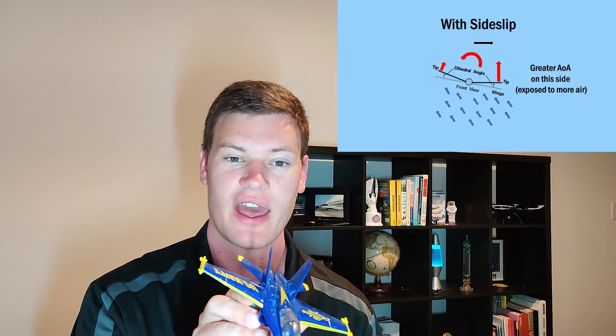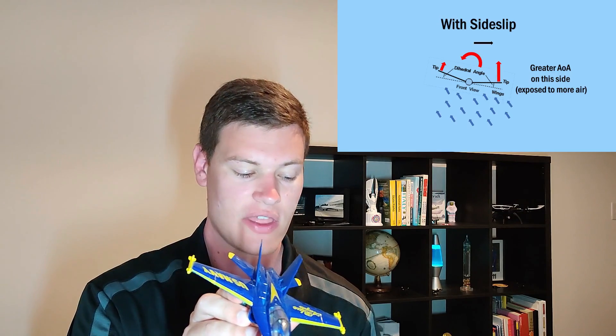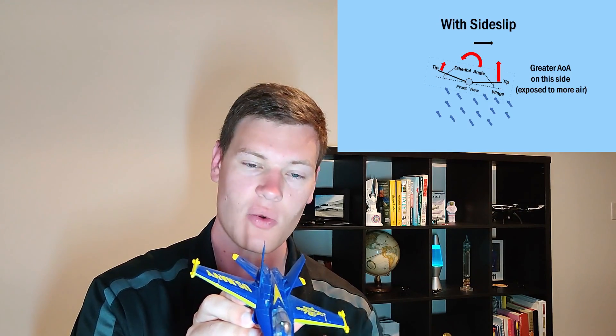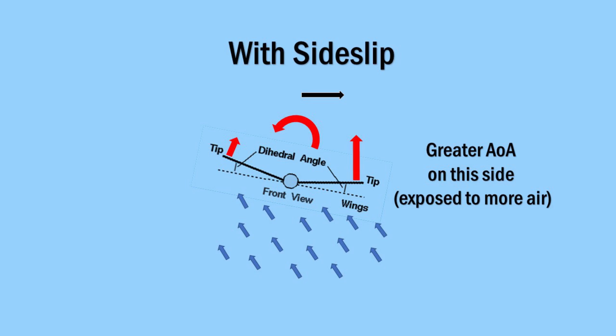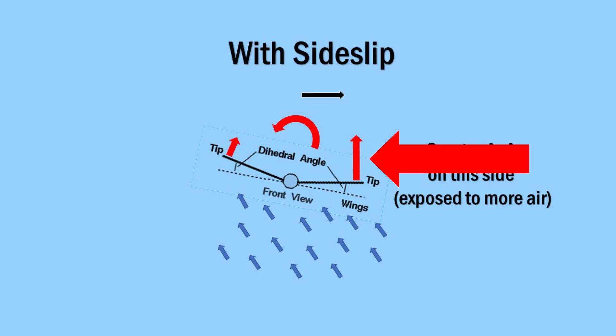What sideslip means is that when an aircraft rolls, it doesn't just roll to the side, but it also begins to slip sideways. When that happens, the air hits the wing at a different angle. When this sideslip happens on dihedral wings, the inside wing of the roll is exposed to more air, which produces more lift, which pushes the aircraft back to center to auto-stabilize it.